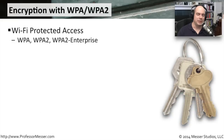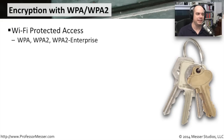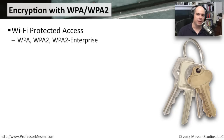When that encryption vulnerability was found, we needed something quickly to replace it. So we came up with Wi-Fi Protected Access, referred to as WPA. There's also WPA2, and even a flavor called WPA2 Enterprise, which integrates with 802.1x to perform authentication.